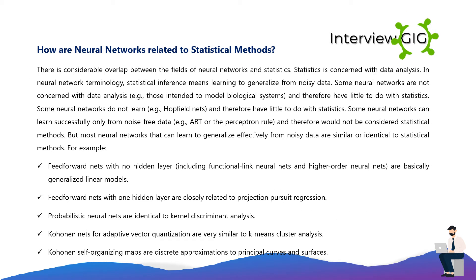How are neural networks related to statistical methods? There is considerable overlap between neural networks and statistics. Statistics is concerned with data analysis, and in neural network terminology, statistical inference means learning to generalize from noisy data. Some neural networks are not concerned with data analysis — such as those modeling biological systems — and have little to do with statistics. Some networks do not learn at all, such as Hopfield nets. Some can only learn from noise-free data, such as ART or the perceptron rule, and would not be considered statistical methods. But most neural networks that learn to generalize effectively from noisy data are similar or identical to statistical methods.